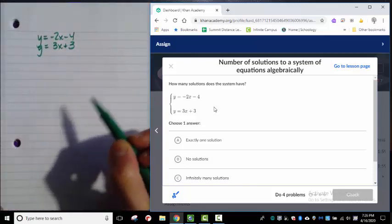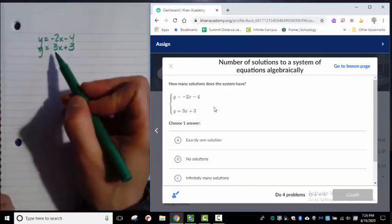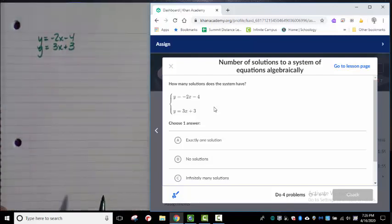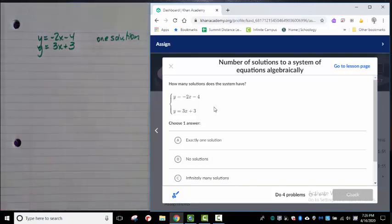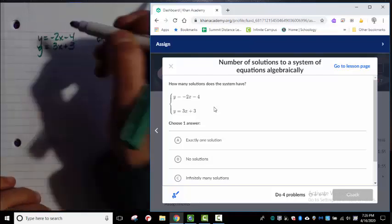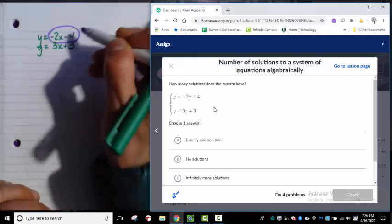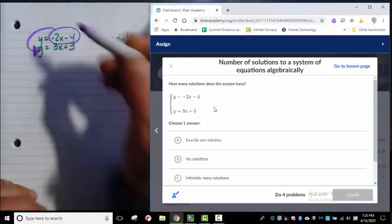So for me, I can tell from the slopes that these are not parallel lines. And they can't be overlapping. So I know this is going to have one solution. But let's pretend I didn't notice that. So I'm going to go ahead and start solving. For me, this one looks like an easy one to solve by substitution. Because I can substitute this for the y.